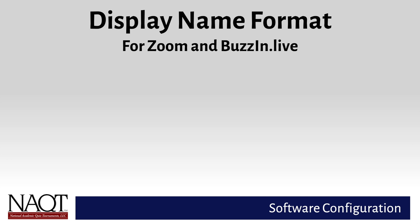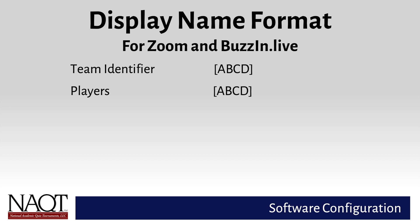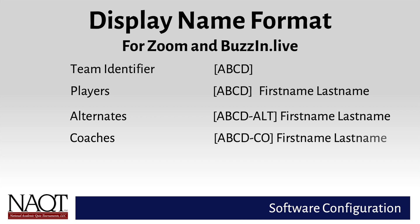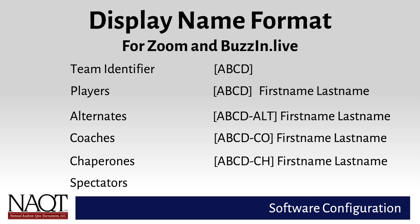Each team will be assigned a four-character team identifier, which it will use throughout the tournament. Players will use a name consisting of square brackets surrounding the team identifier, followed by the player's first and last name. Alternates — rostered players who are not currently one of the four players in the game — should add a hyphen and the letters ALT after the team identifier, again followed by first and last name. When an alternate becomes a player, or vice versa, their names in Zoom and Buzzin.live must be updated accordingly. Coaches should similarly add hyphen CO after the team identifier, and chaperones who are not coaches should add hyphen CH. Spectators affiliated with a team should use that team's ID with hyphen SP and their full name.